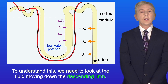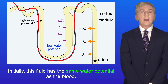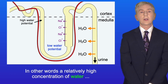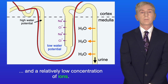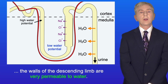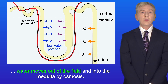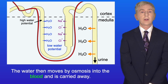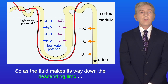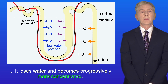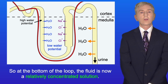To understand this, we need to look at the fluid moving down the descending limb. Initially, this fluid has the same water potential as the blood — in other words, a relatively high concentration of water and a relatively low concentration of ions. However, unlike the ascending limb, the walls of the descending limb are very permeable to water. So as the descending limb passes down into the medulla with its low water potential, water moves out of the fluid and into the medulla by osmosis. The water then moves by osmosis into the blood and is carried away. So as the fluid makes its way down the descending limb, it loses water and becomes progressively more concentrated. At the bottom of the loop, the fluid is now a relatively concentrated solution.